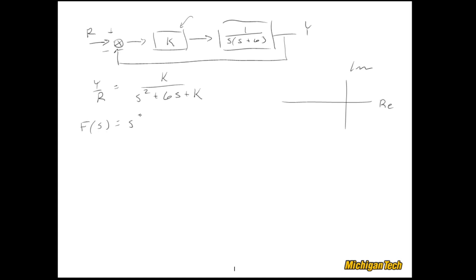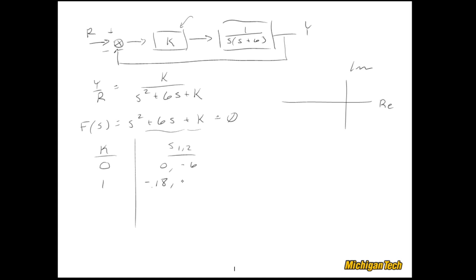Let's look at this in a brute-force kind of way. Here's the characteristic equation — a second-order equation we can solve in many ways. At K = 0, the poles are at 0 and negative 6. At K = 1, using the quadratic formula, we get negative 0.18 and negative 5.8.